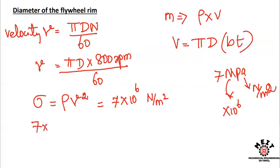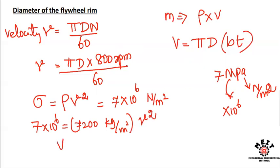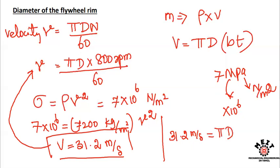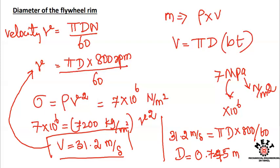Substituting the values: 7×10⁶ N/m² equals 7200 kg/m³ times velocity squared. Solving this gives velocity equal to 31.2 meters per second. Substituting this velocity back into V equals π×d×N/60, with N equal to 800 RPM, gives the diameter d equal to 0.745 meters.